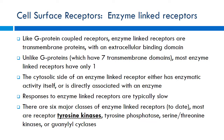Next we have enzyme linked receptors. They're becoming more popular as drug targets, especially for certain disease states like cancer. The most important one we'll deal with is tyrosine kinase — the most important enzyme linked receptor. DNA synthesis and cell proliferation are really important targets here. You can see why this would be important for cancer treatment: if a tyrosine kinase receptor affects cell proliferation and cancer is unchecked cell proliferation, targeting and shutting down this receptor could potentially stop cancer's growth.